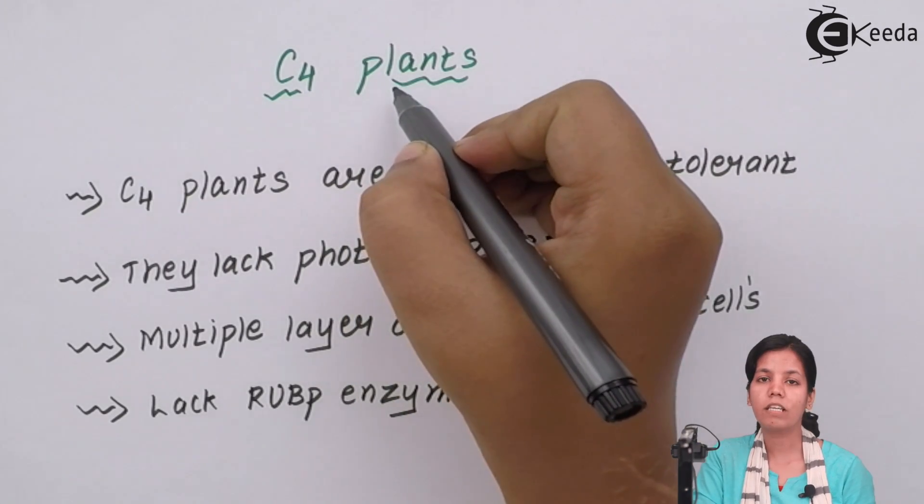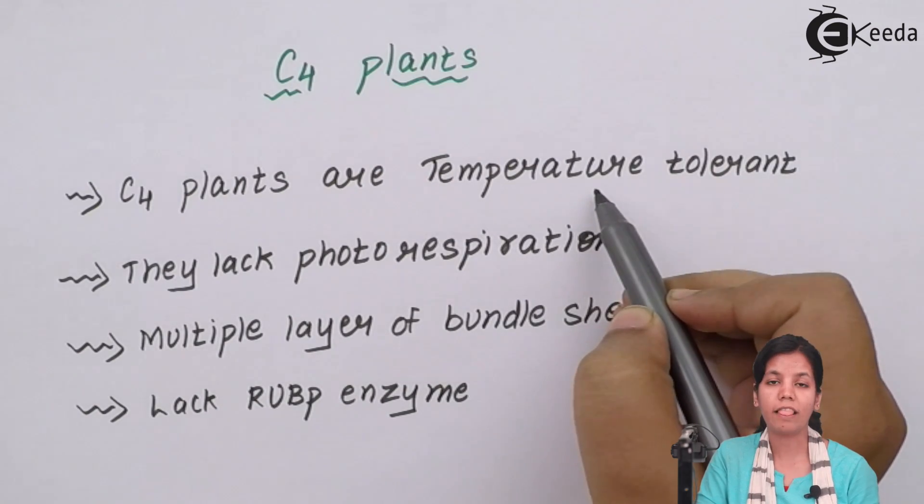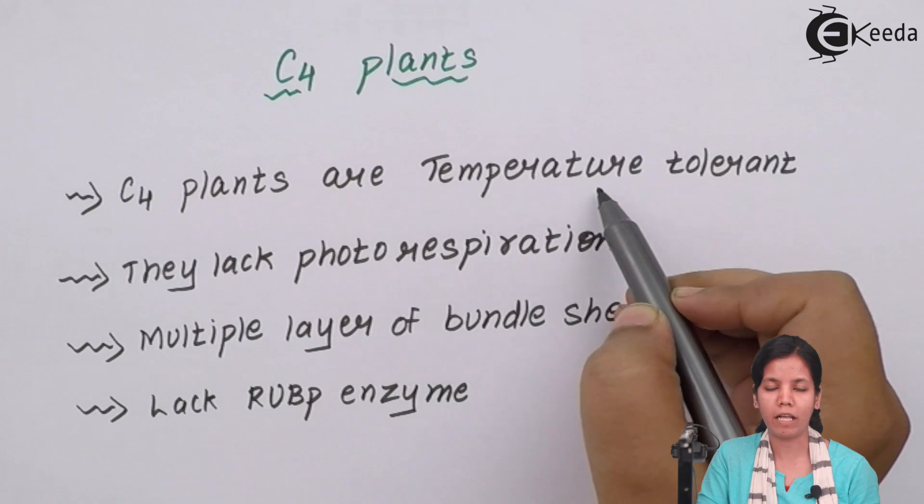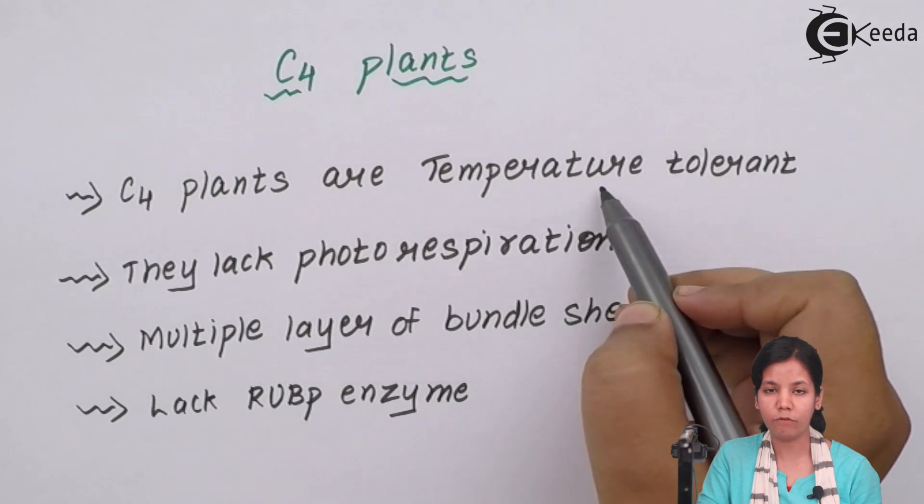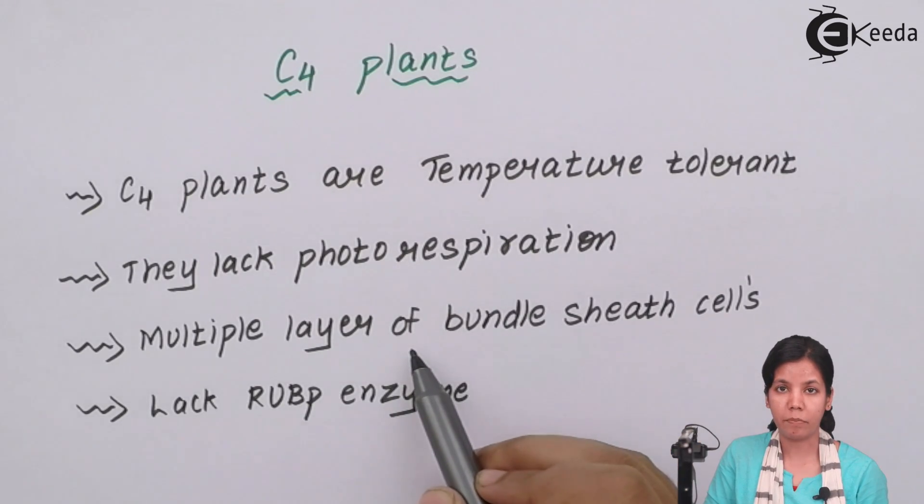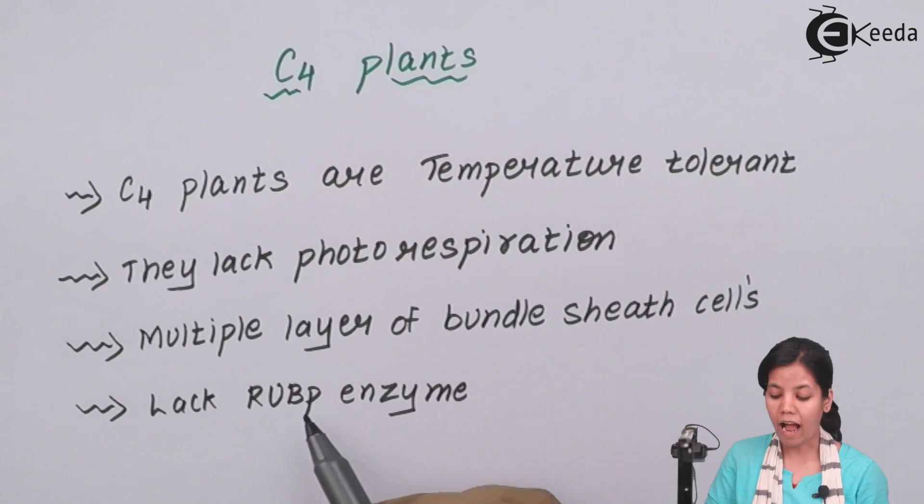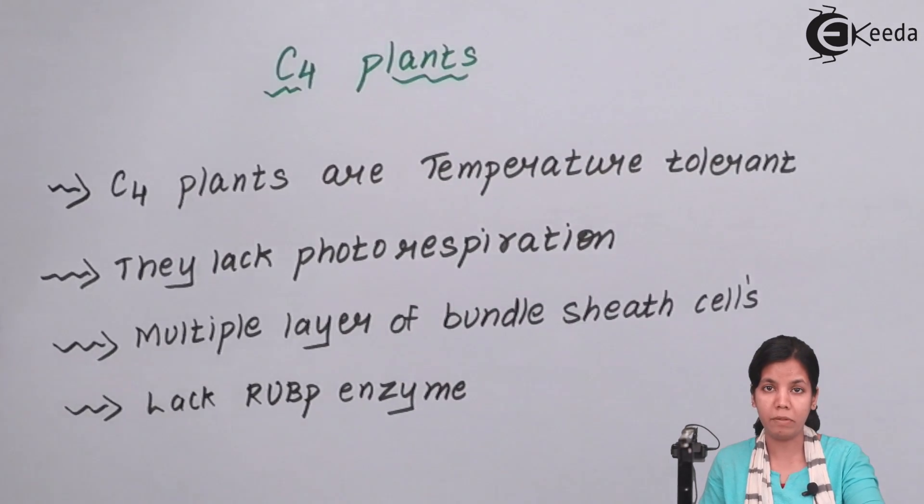Now why C4 plants came into picture or why C4 pathway was brought into picture? C4 plants are basically temperature tolerant, that is they grow in dry climatic condition. The sun is quite high when C4 plants are grown. All your millets, Jawar, Bajri, Nachni all are C4 plants basically. They lack photorespiration, that is respiration in the presence of sunlight. There is multiple layers of bundle sheath cells present, and when you know that when there are multiple layers of bundle sheath present, there is difficulty for moving in of molecules especially RUBP. And lastly C4 plants lack RUBP enzyme which is Ribulose Bisphosphate enzyme. So how does C4 pathway actually work? We will be studying that now.